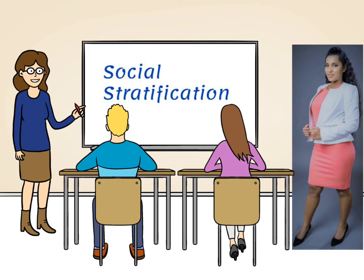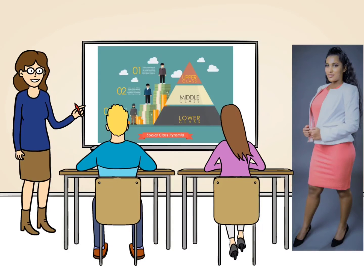Social stratification is both universal, meaning that it happens everywhere in every society, and variable, which means that it would differ across different societies. In modern Western societies such as our society, there are three classes which make up the social hierarchy: the upper class, the middle class, and the lower class, which we more commonly call the working class.